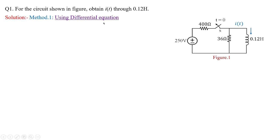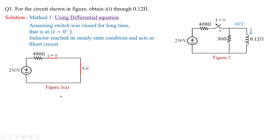We are going to solve the problem first using differential equation approach and that we are going to treat as method 1. Assuming switch was closed for long time, that is at t equal to 0 minus, inductor reached its steady state condition and acts as short circuit. This is Figure 1a which is taken as the condition for t equal to 0 minus and the current which is flowing through this is i(0-) and that current is obtained to be 0.625 amperes.